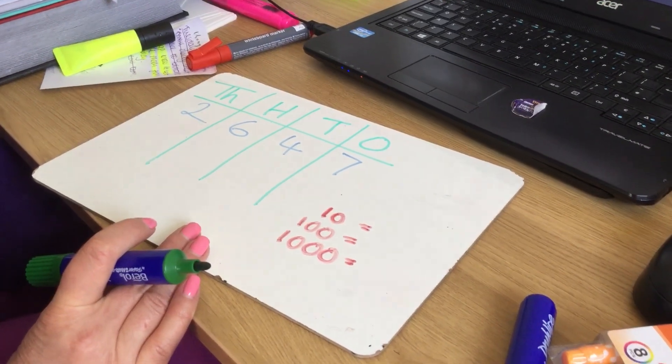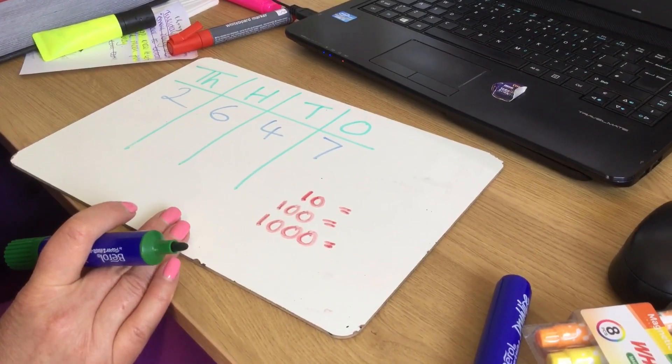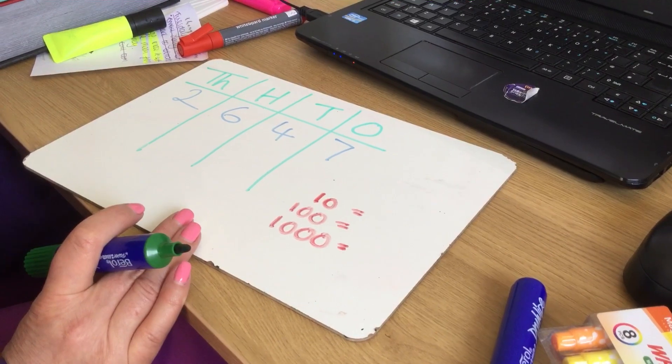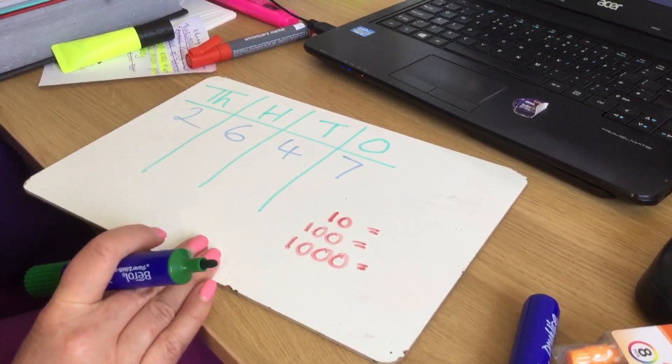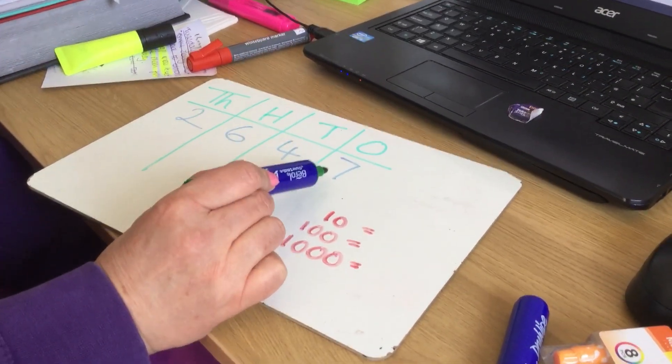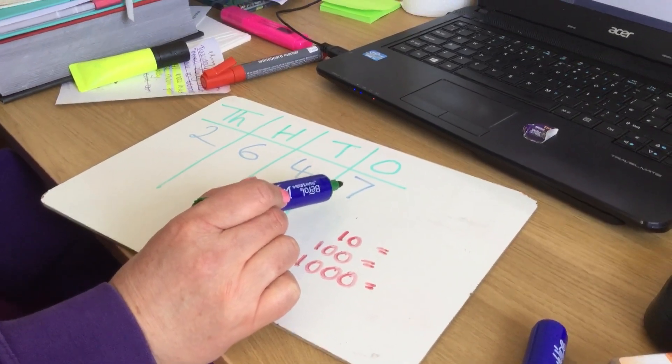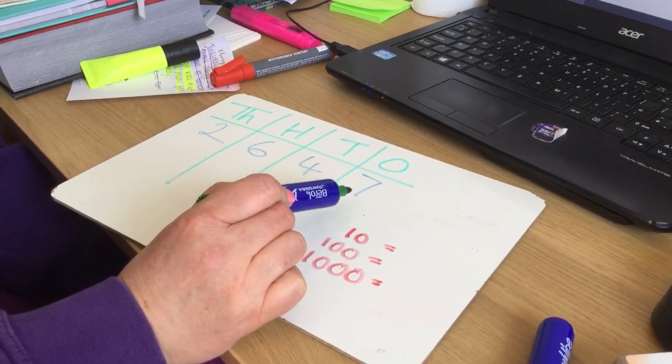So today we're doing rounding, and I thought I'd give you a quick recap on our rounding rules. When we're doing rounding, we're always looking to the column on the right. It's the number that's in the right-hand column of the one you're rounding that you need to focus on.